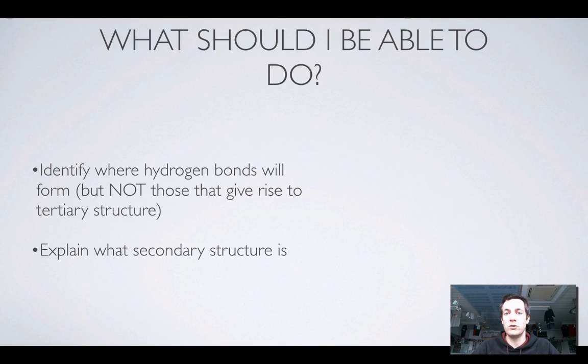Now what should you be able to do when it comes to the secondary structure of proteins? You should be able to identify where hydrogen bonds will form, but if you're asked about secondary structure, you must be drawing them between the right groups. And this will make a bit more sense when we talk about tertiary structure next. And you can explain what the secondary structure is, so that's this twisting or folding of the polypeptide chain caused by this hydrogen bonding between amide groups.